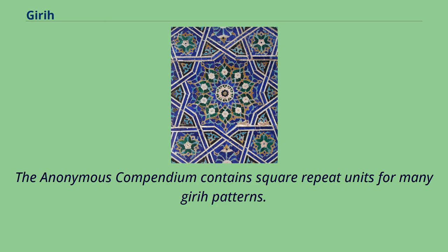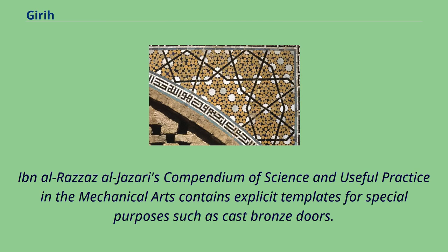The anonymous compendium contains square repeat units from many girih patterns. Ibn al-Razzaz al-Jazari's Compendium of Science and Useful Practice in the Mechanical Arts contains explicit templates for special purposes such as cast bronze doors.